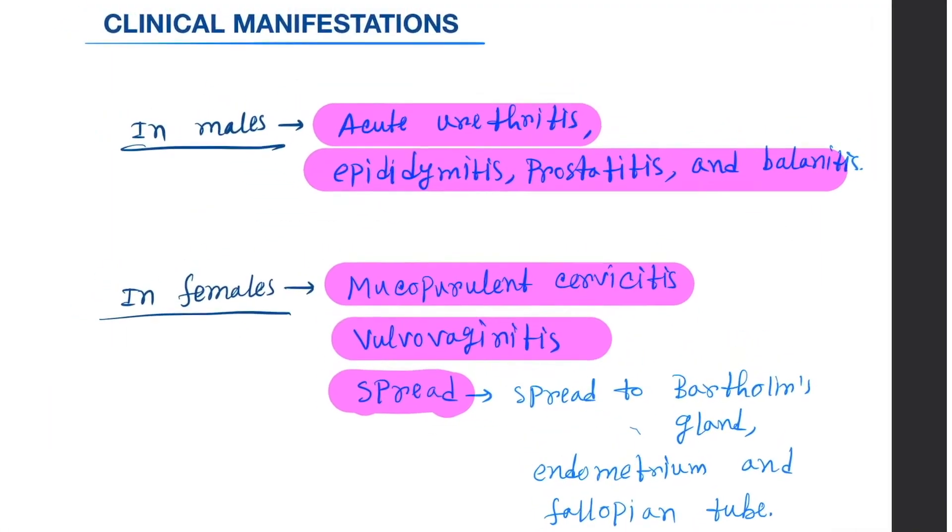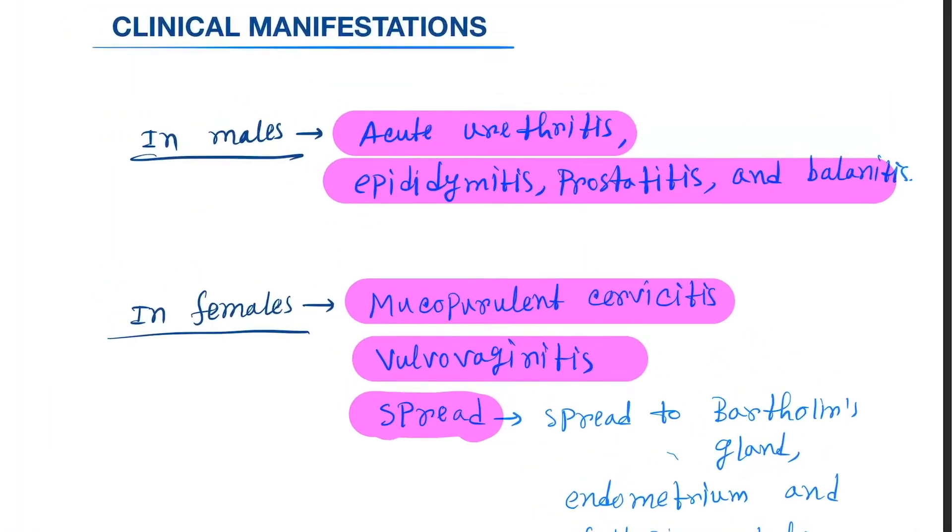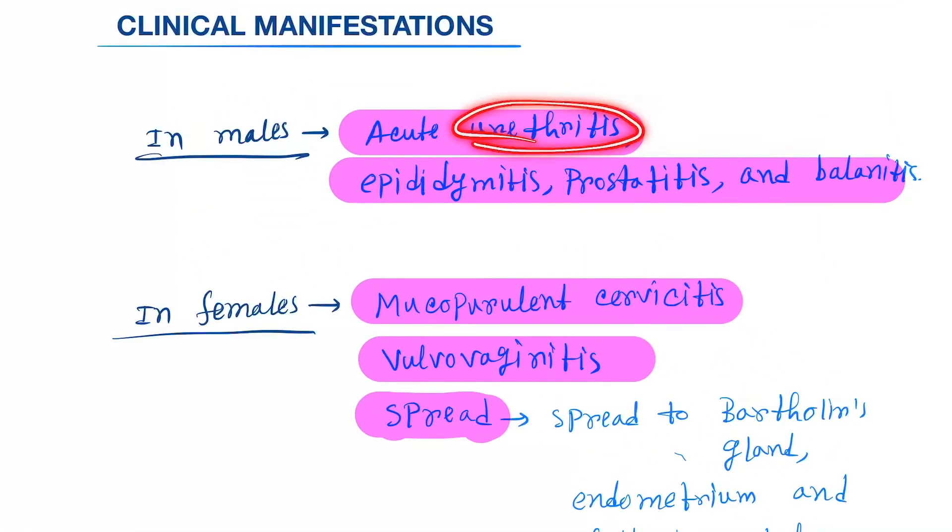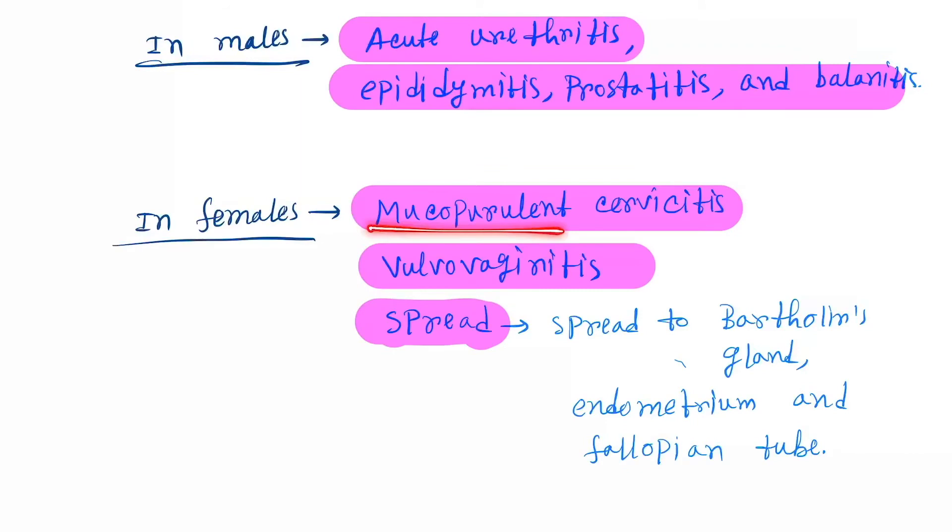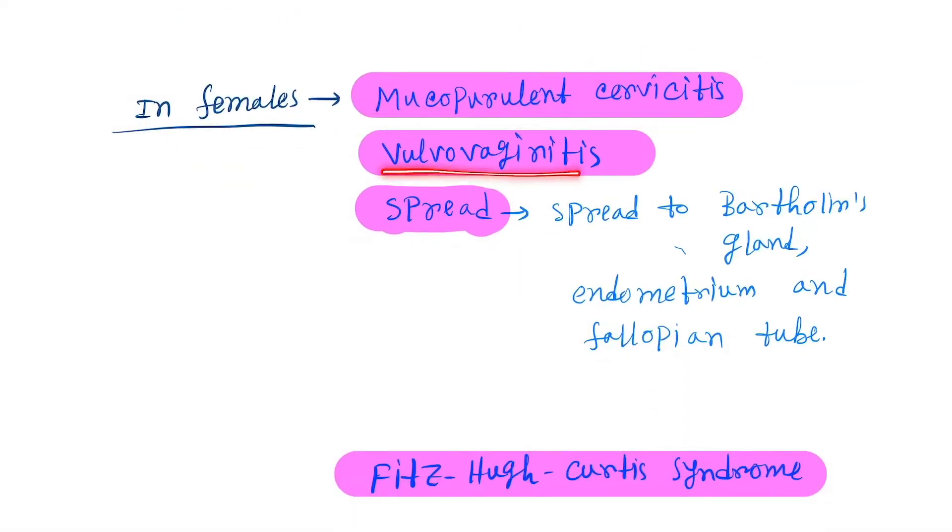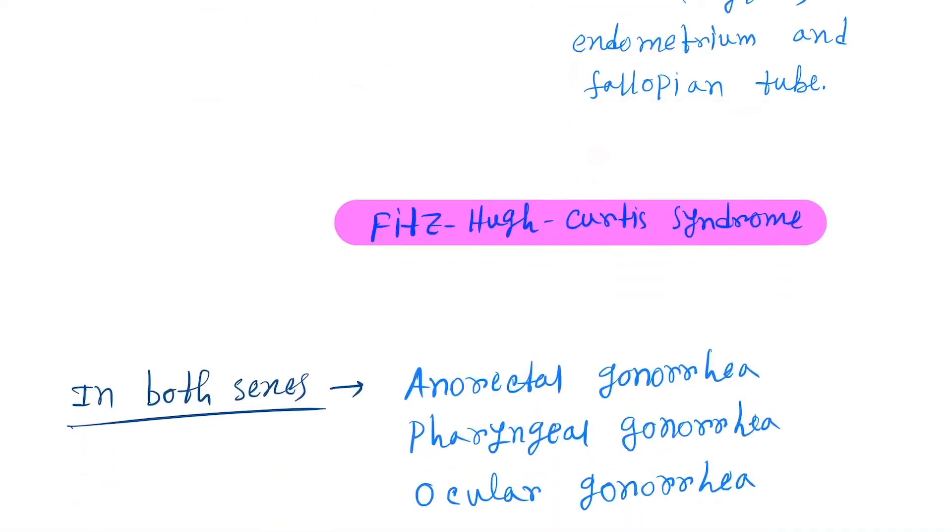Clinical manifestations: in males they cause acute urethritis, epididymitis, prostatitis, and balanitis. In females, mucopurulent cervicitis, vulvovaginitis, spread to Bartholin glands, endometrium, and fallopian tubes.